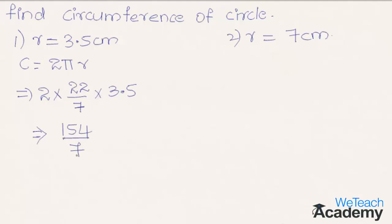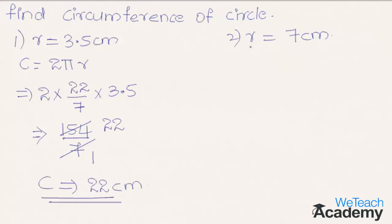Let us simplify this: 7 one time is 7, and 7 twenty-two times is 154. So we get the circumference of the circle is equal to 22 centimeters.